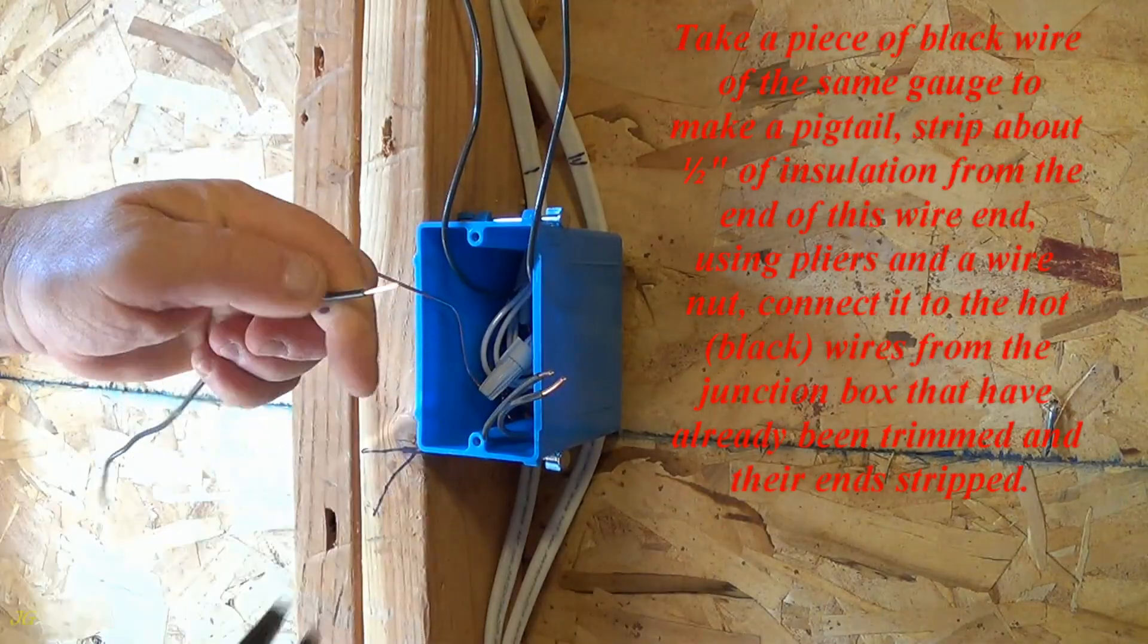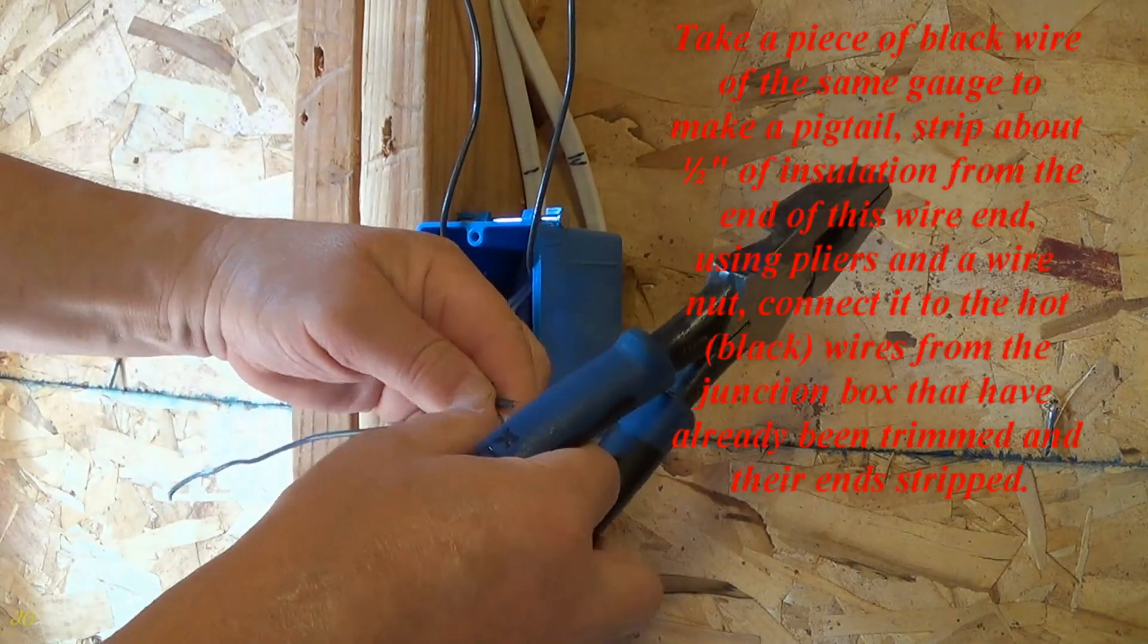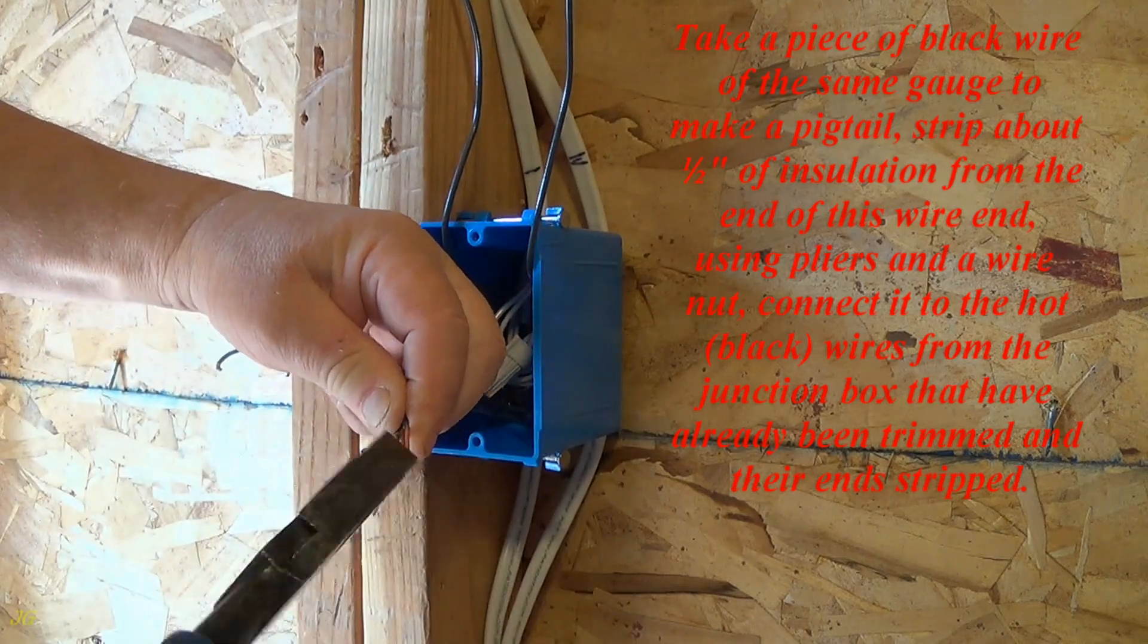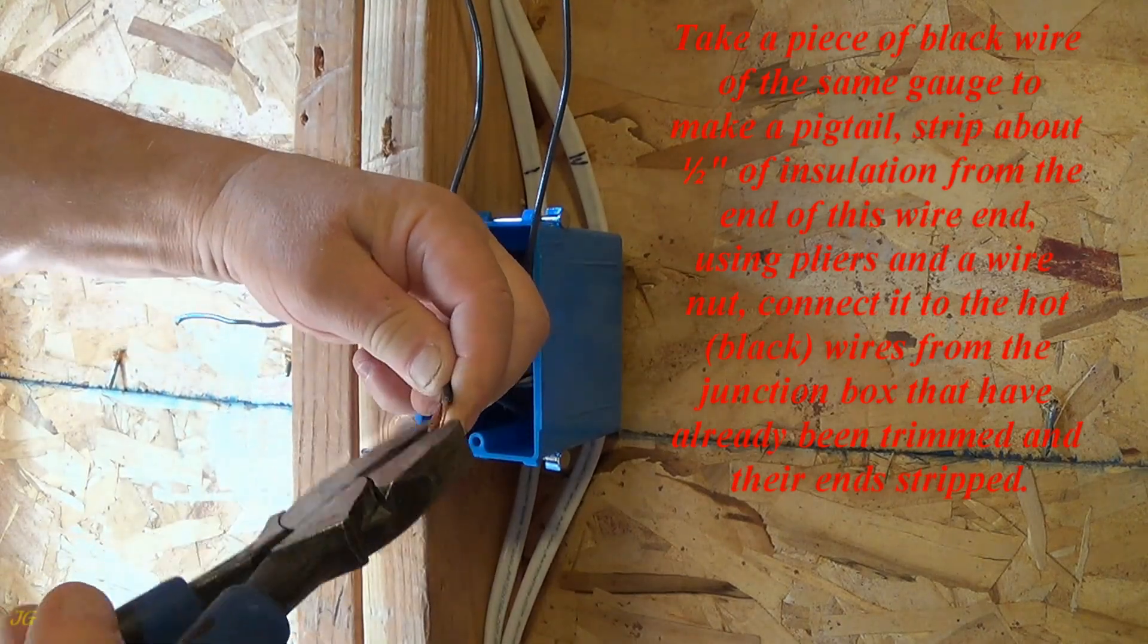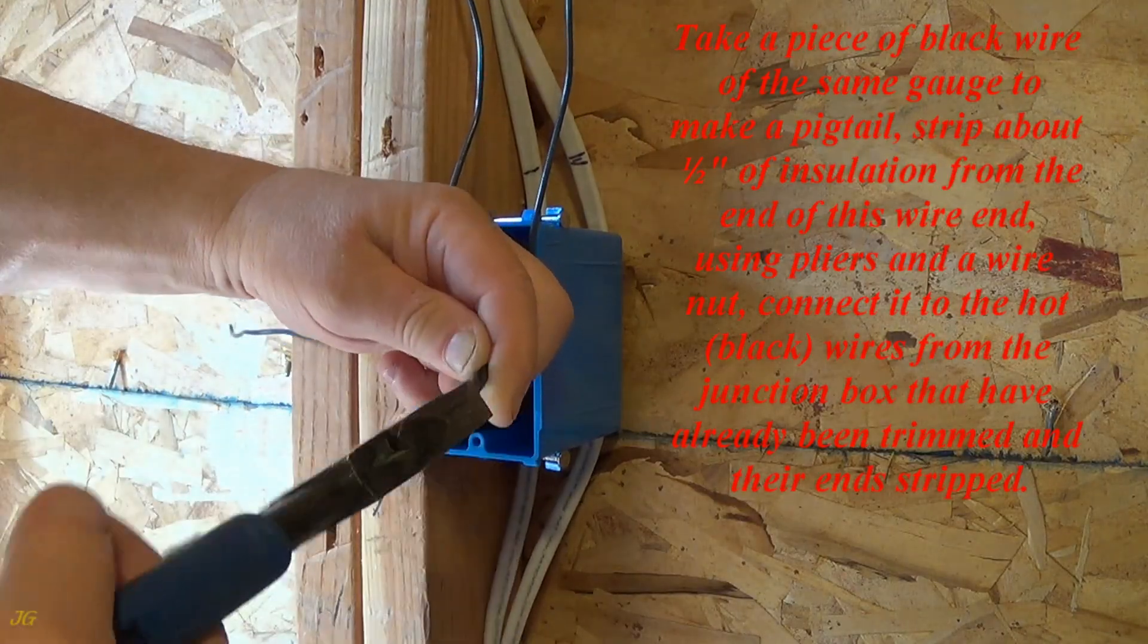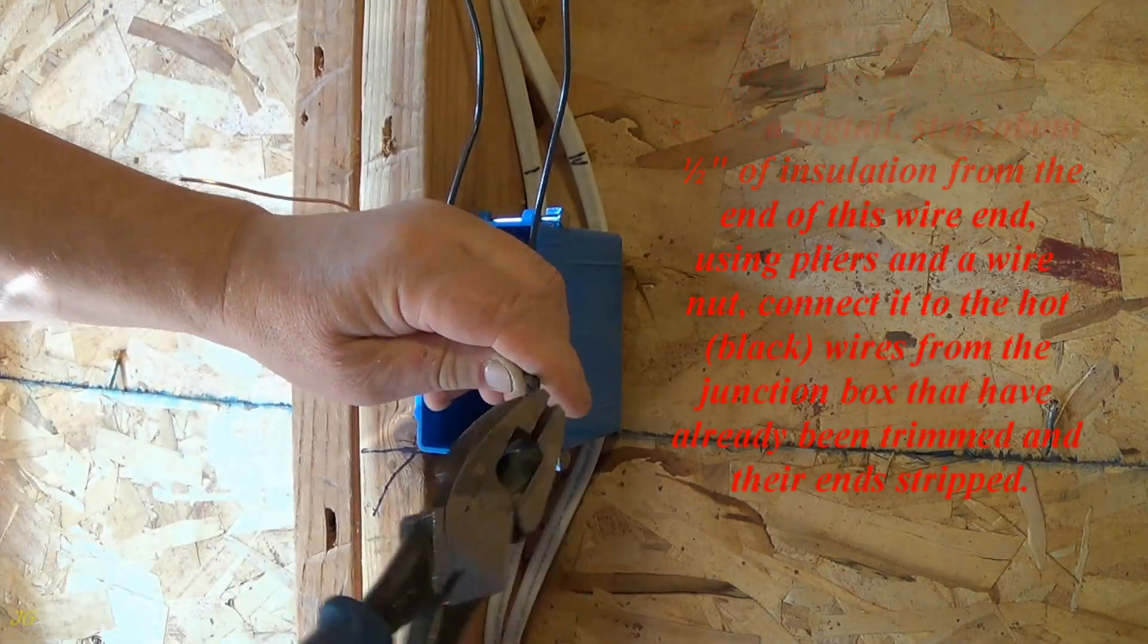Take a piece of black wire of the same gauge to make a pigtail, strip about one half inch of insulation from the end of this wire. Using pliers and a wire nut, connect it to the hot, black wires from the junction box that have already been trimmed and their ends stripped.